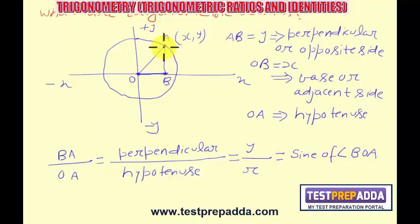Dear student, even if you take this A anywhere on this circle, Y coordinate upon radius of this circle will always be equal to sine of the angle. This angle, if I write this as theta, I will write this Y by R as sine theta, sine of angle BOA.